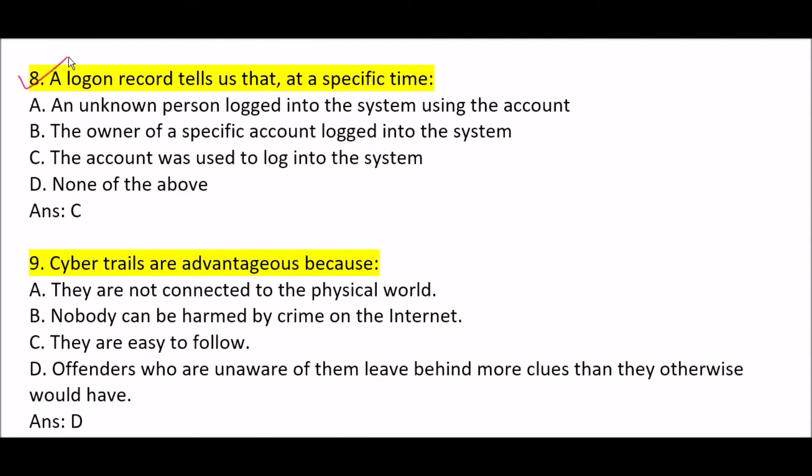Next question: a logon record tells us that at a specific time — Option A: an unknown person logged into the system using the account. Option B: the owner of a specific account logged into the system. Option C: the account was used to log into the system. Option D: none of the above. Correct answer is Option C — the account was used to log into the system.